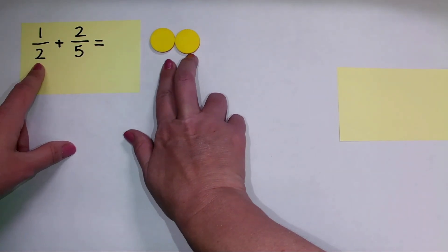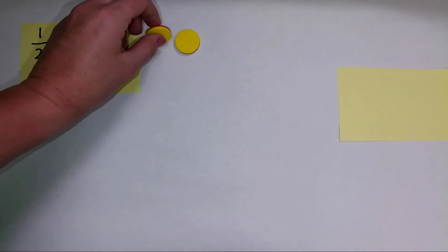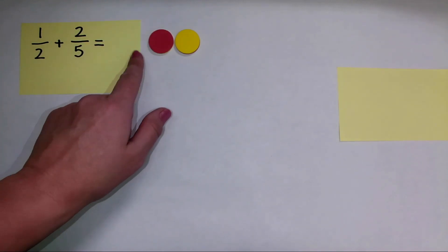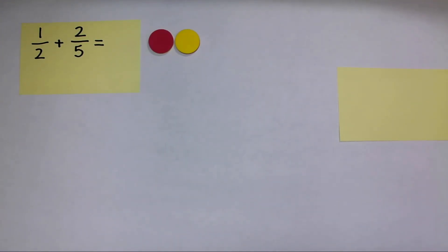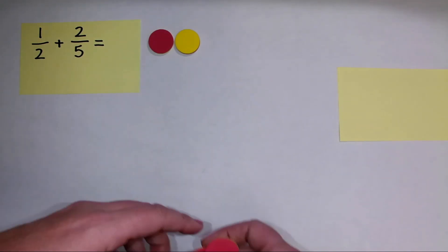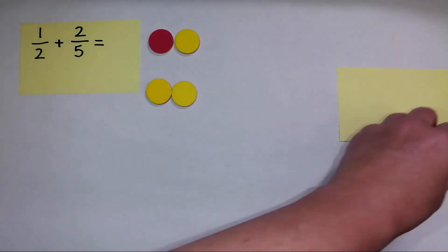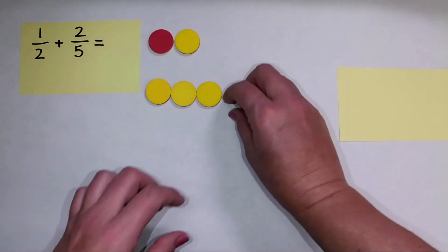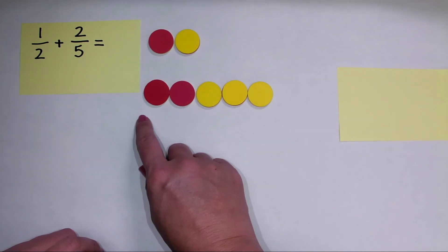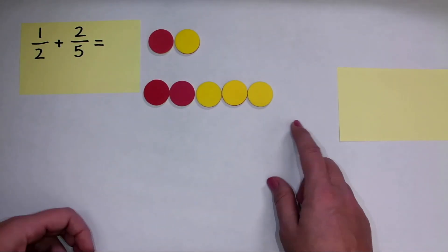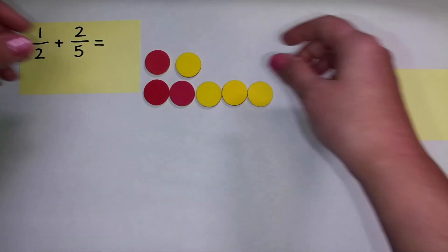So first I'm going to show a set with two in the denominator, and I'm going to flip over one of those counters to show one half. Today we have the red representing our numerator or the parts of the fraction. Then I'm also going to show a set of five, and within those five I am going to flip over two to show the fraction two fifths. Now I can't just add these counters together. That does not work.